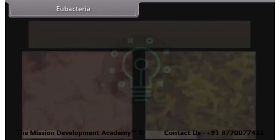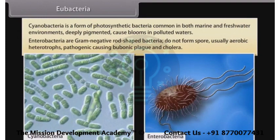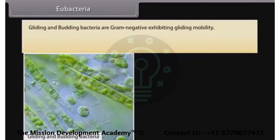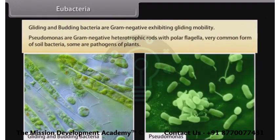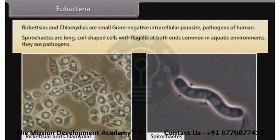Actinomyces are Gram positive soil bacteria with branching filaments that produce spores. Chemo-autotrophs are bacteria able to obtain energy from inorganic chemicals. Cyanobacteria are photosynthetic bacteria common in marine and freshwater environments; deeply pigmented, they cause blooms in polluted waters. Enterobacteria are Gram negative rod-shaped bacteria, usually aerobic heterotrophs, and are pathogenic, causing bubonic plague and cholera. Gliding and budding bacteria are Gram negative exhibiting gliding mobility. Pseudomonas are Gram negative heterotrophic rods with polar flagella, common in soil; some are pathogens of plants. Rickettsias and Chlamydias are small Gram negative intracellular parasite pathogens of humans. Spirochetes are long coiled-shaped cells with flagella at both ends, common in aquatic environments, and are pathogens.